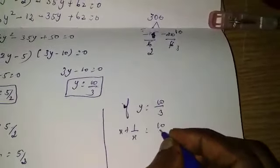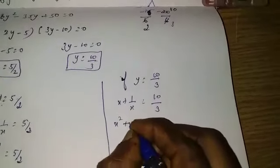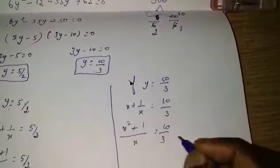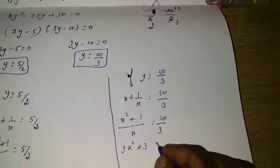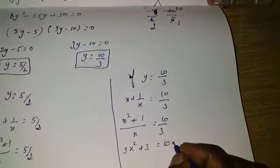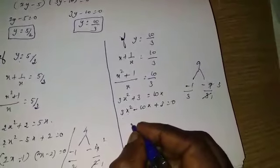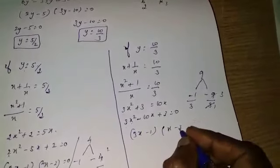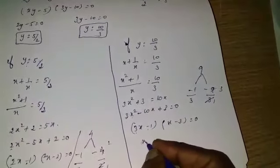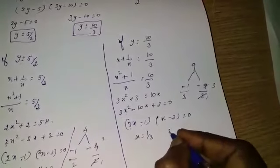If y equals 10 by 3, then x plus 1 by x equals 10 by 3. Taking LCM and cross multiplying gives 3x² plus 3 equals 10x, so 3x² minus 10x plus 3 equal to 0. Factorising: (3x minus 1)(x minus 3) equal to 0. Therefore x equals 1 by 3 or x equals 3.